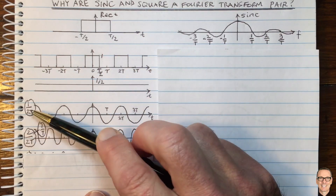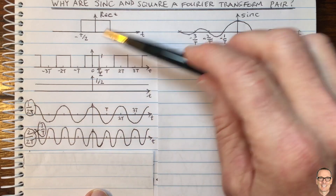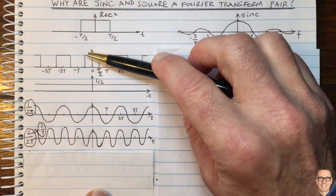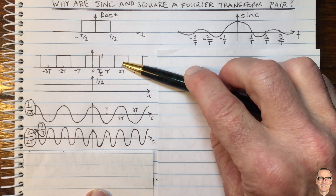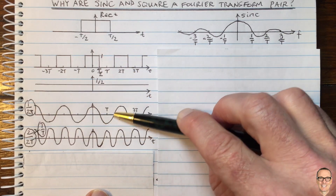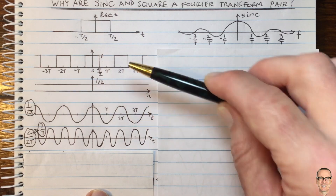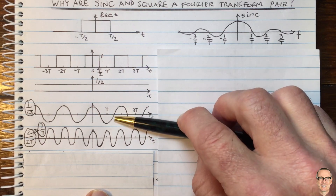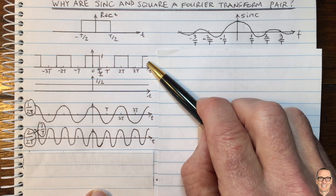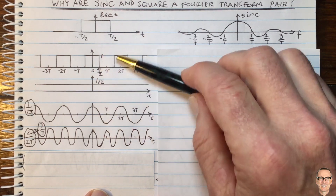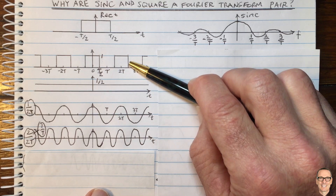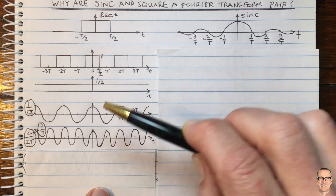I should point out that the only frequencies that can exist in this repeating waveform are multiples of the fundamental frequency. Because if you had any other frequencies, when you add them together they wouldn't result in a repeating waveform. I think that's easy to convince yourself of. If not, I've got a video on the channel that relates to that.